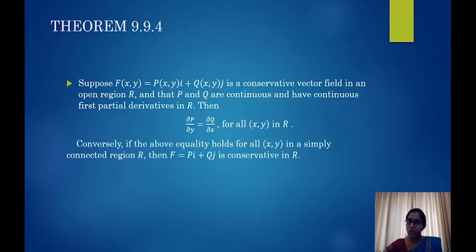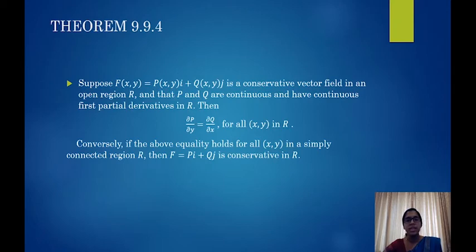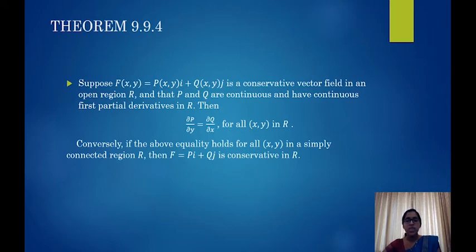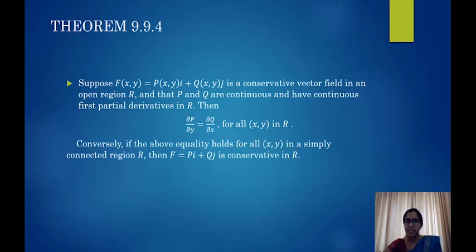The converse is also true: that is, if ∂P/∂y = ∂Q/∂x for every (x, y) in the simply connected region R, then the field F = Pi + Qj will be conservative in R. So this is an if-and-only-if statement which gives us the idea to check whether a given vector field is conservative or not.